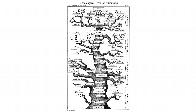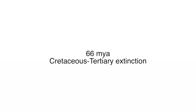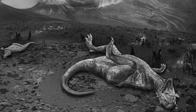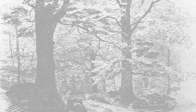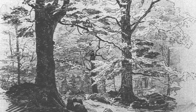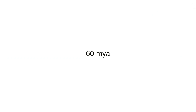We're only going to focus on one particular branch of this tree, starting around 66 million years ago with the Cretaceous Tertiary Extinction — the extinction of the dinosaurs. There were only a few survivors of the Cretaceous Tertiary Extinction, most of them being mammals. They continued to evolve into other living things, and about 60 million years ago, our first ancestor came to be.